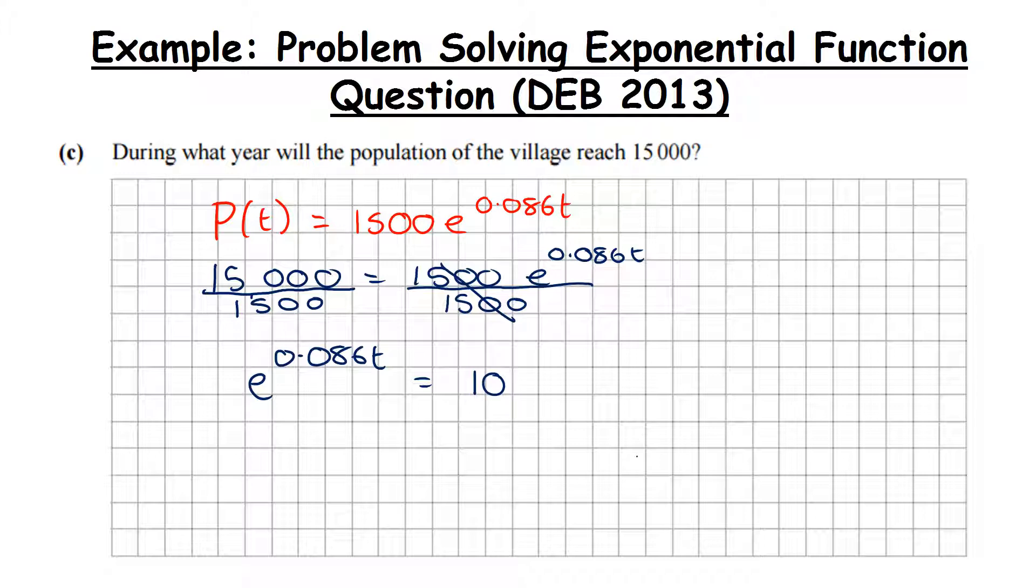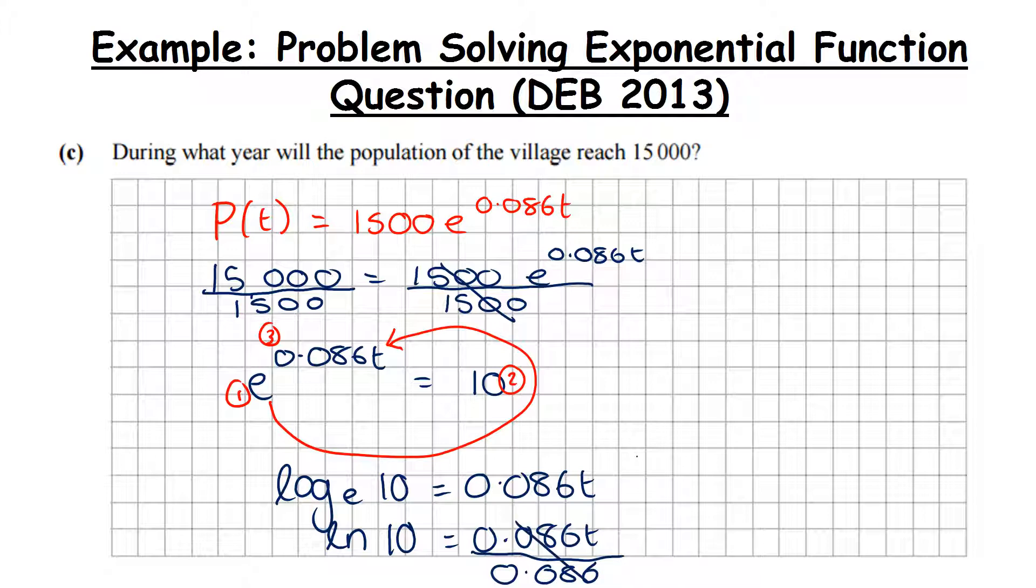So again, we're going to our log tables, page 21, and we're going to use our formula to convert. I'm going to use my circle method here: 1, 2, 3. So it becomes log to base E of 10 is equal to 0.086t. Now remember, natural log is log to base E. So the natural log of 10 is equal to 0.086t. What we're going to do then is divide both sides by 0.086. So t is equal to the natural log of 10 all over 0.086.